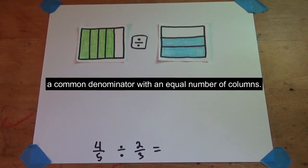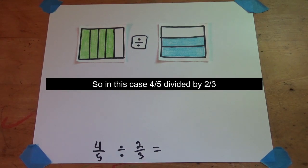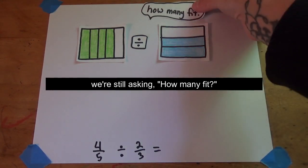Sometimes it's not as easy to create a common denominator with an equal number of columns. So in this case, 4/5 divided by 2/3, we're still asking how many fit.